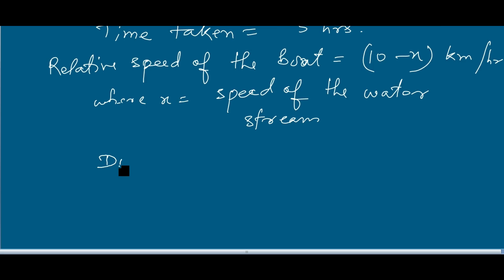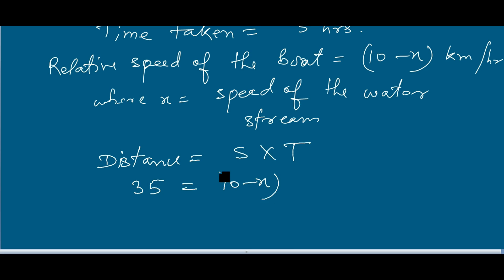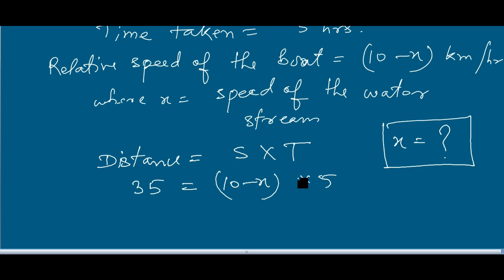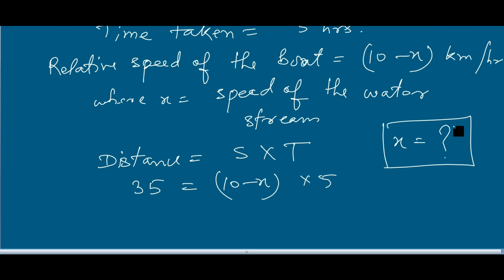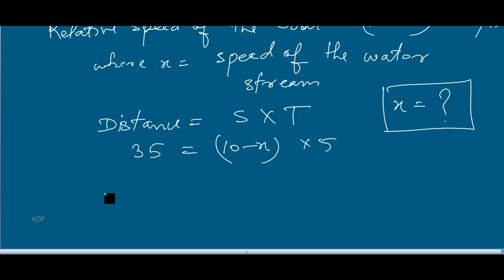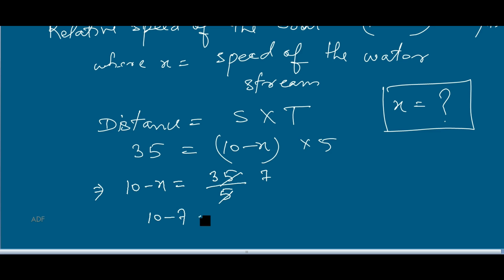As per the condition, distance equals speed into time. Therefore 35 equals (10 minus x) into 5. So 10 minus x equals 35 divided by 5, which equals 7. Therefore 10 minus 7 equals x, so x equals 10 minus 7, which is 3.